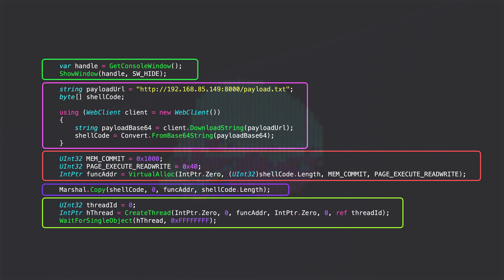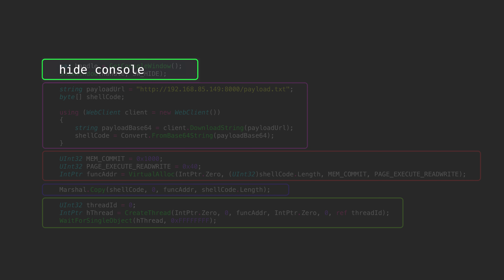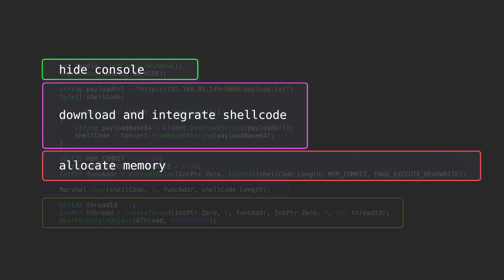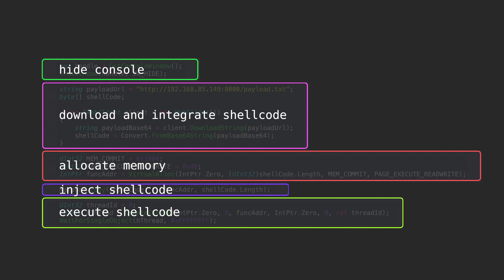Let's replace the contents of our main function with the five main ideas. In green is where we make sure our console window is hidden. Below this in pink is where we download and integrate our shellcode into our payload. In orange is where we allocate memory. In purple is where we inject our shellcode into memory. And in chartreuse is where we execute our shellcode from memory. Let's forget about the console hiding for now since it's more about not getting caught by the user than by AV or EDR. That leaves us with four core sections.